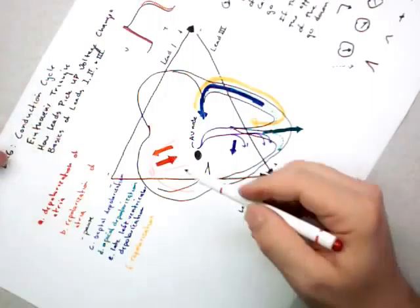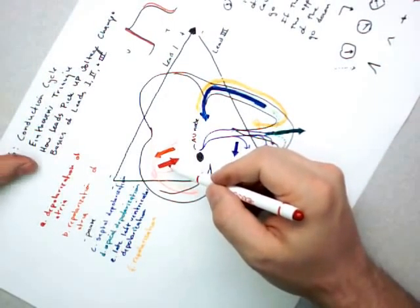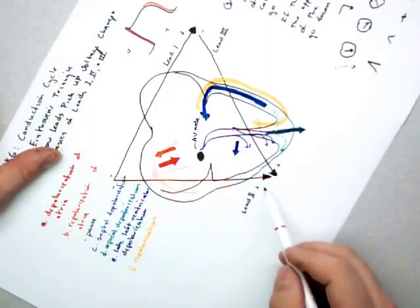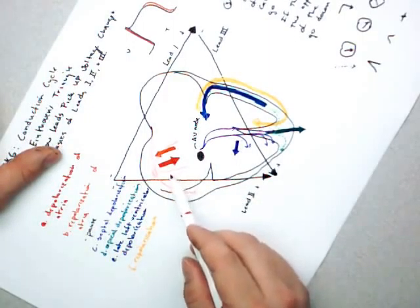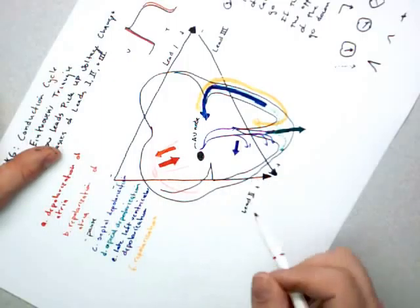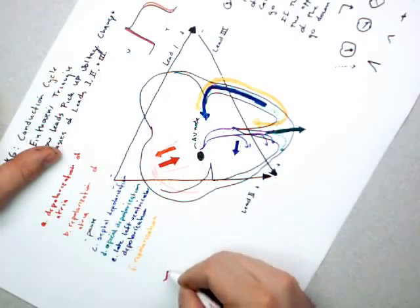So the first step in our conduction cycle is right here. And we're going to do lead two, because lead two is the main lead you're going to see. It's running pretty parallel to our lead, and it's running in the direction of our lead. So we're going to see a pretty big upward deflection.